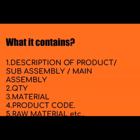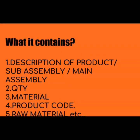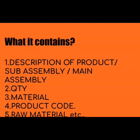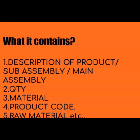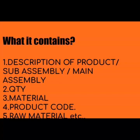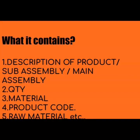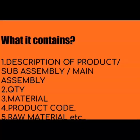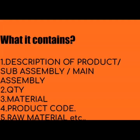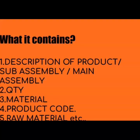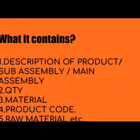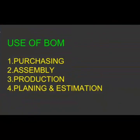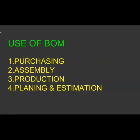The Bill of Materials mainly contains the description of the product, sub-assembly or main assembly, and it describes the quantity and material used in each product. It also specifies the product code or customer code, and it contains the raw material for each and every product. These are the basic things which BOM contains.